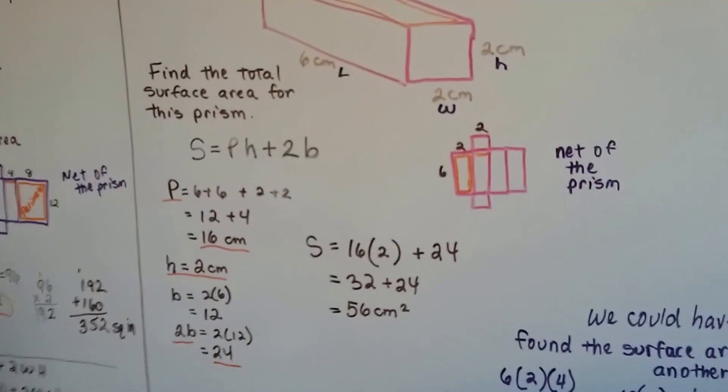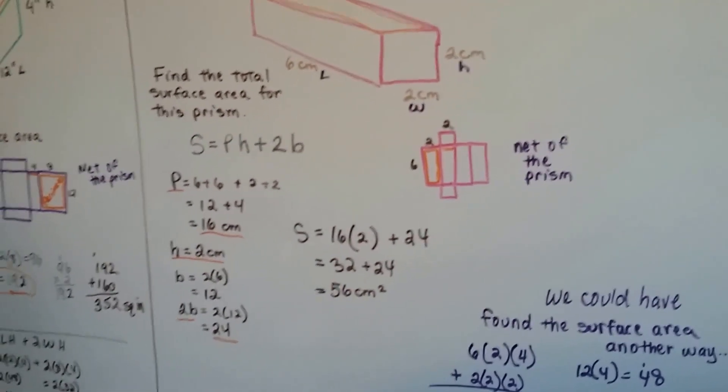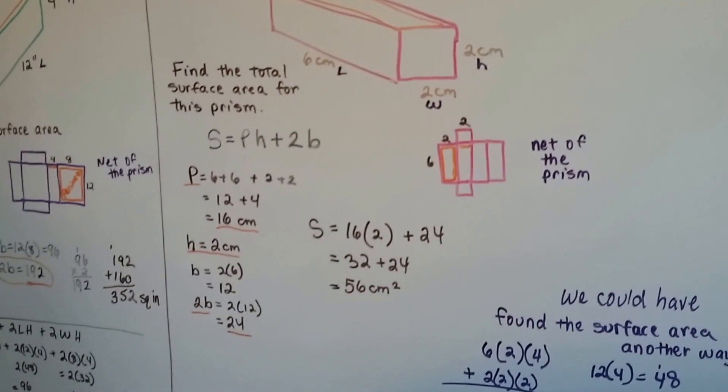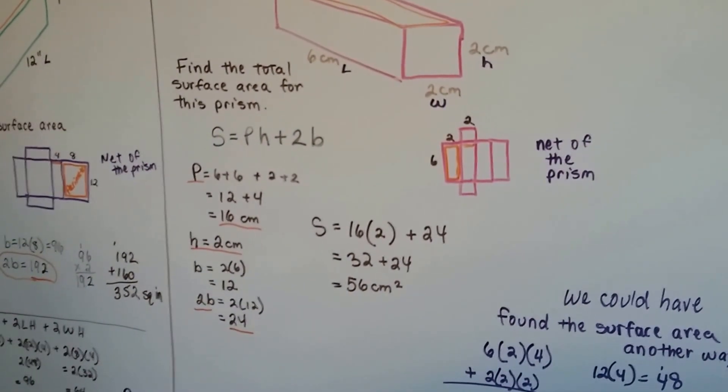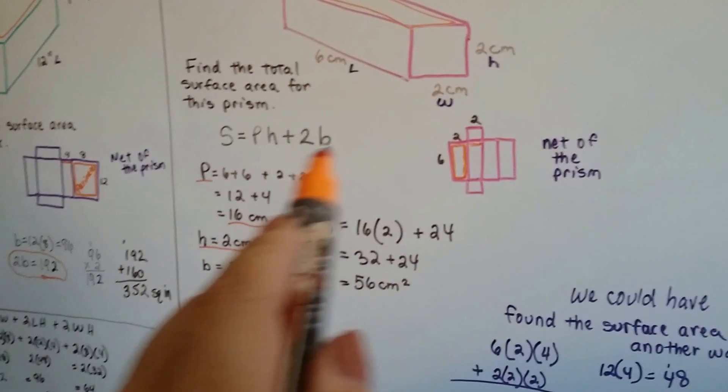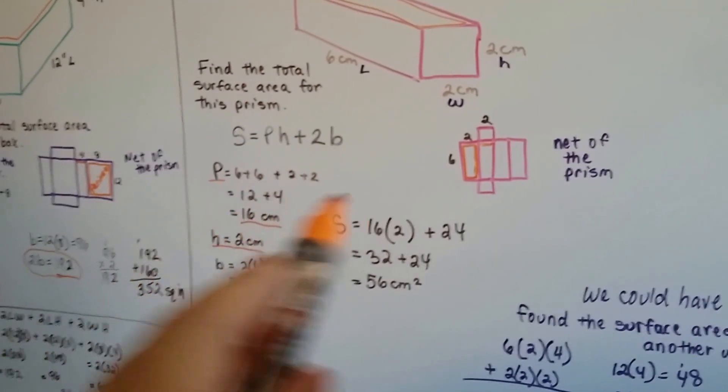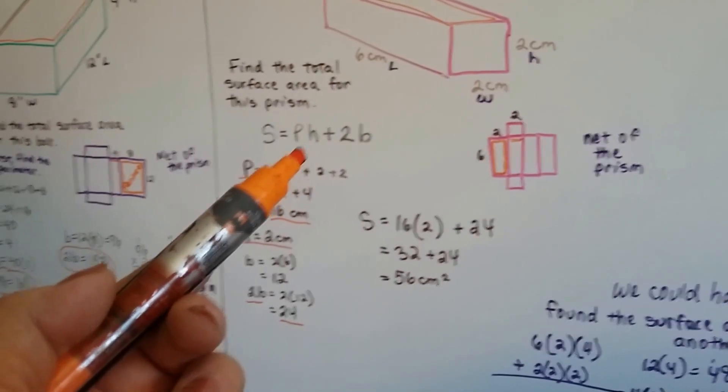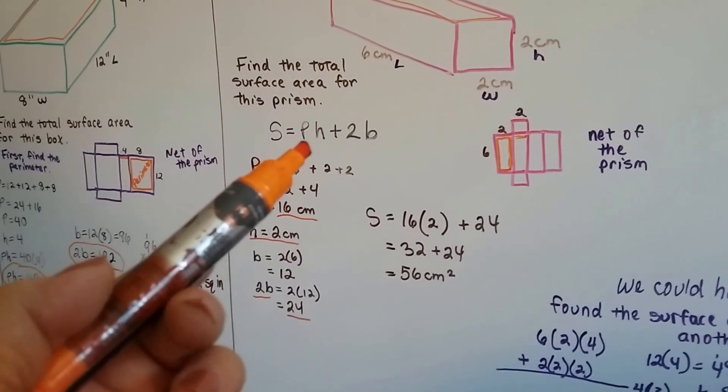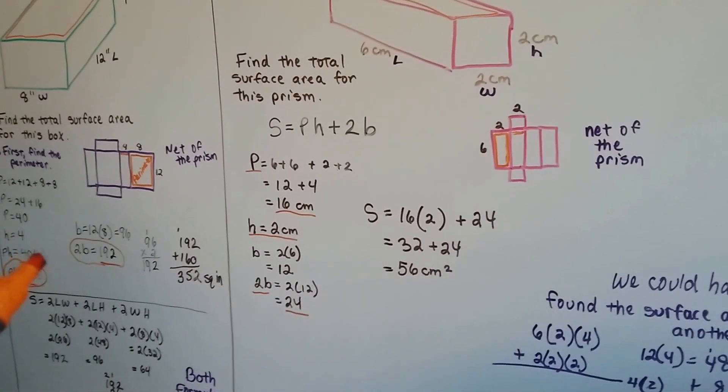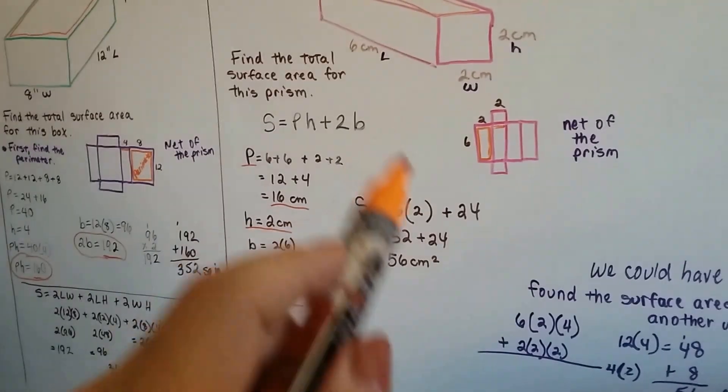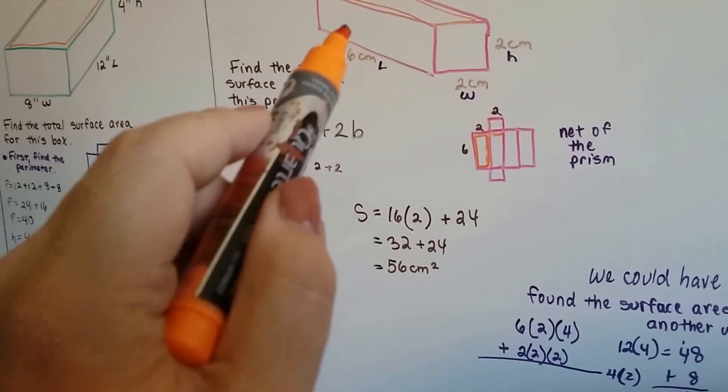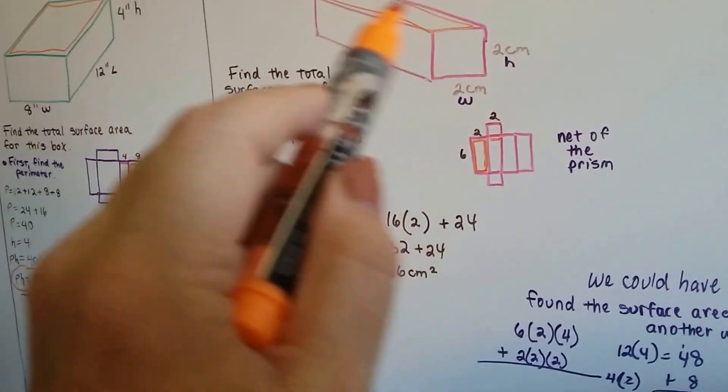There's another way we could have done this. It wouldn't have involved a formula, really. It's really important that you know how to use this formula. Because as we progress in math or geometry, you're going to need to know how to do this. You don't want to get stuck in a rut of just doing baby math.